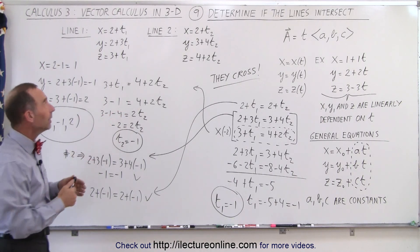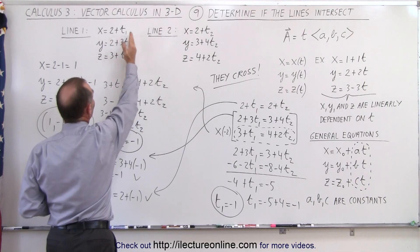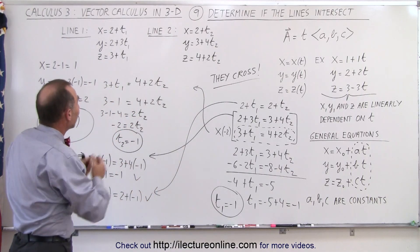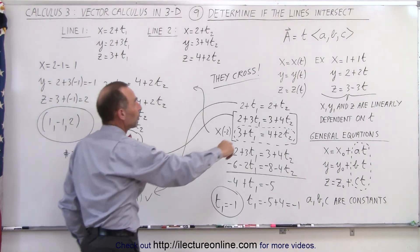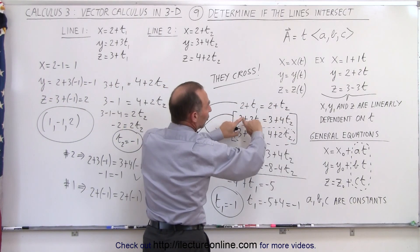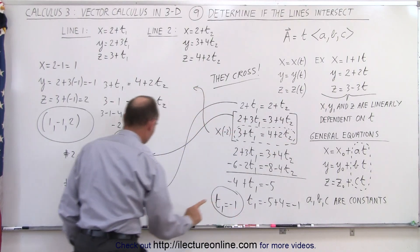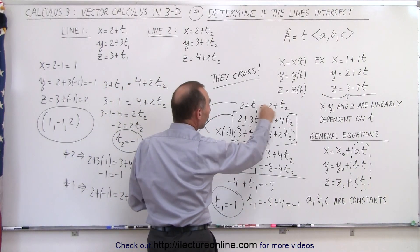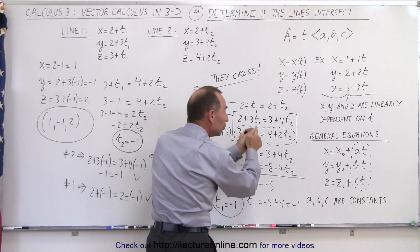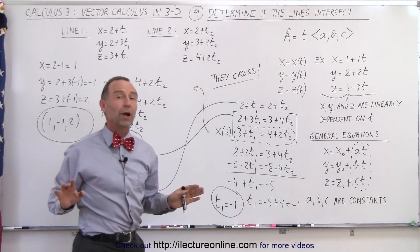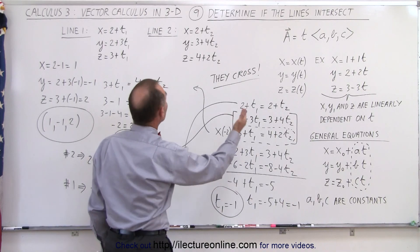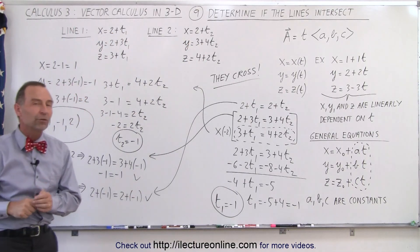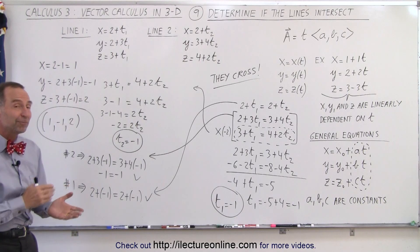To summarize: you determine that the lines cross by assigning different parametric variables t1 and t2 for each line, then setting the three equations equal to each other — giving you three equations and two unknowns. Take two of the equations and solve for the unknowns; we found t1 equals negative 1 and t2 equals negative 1. Those values must also satisfy the remaining equation. If they do, the lines cross; if they don't, they don't. Finally, plug in the value of t1 or t2 and solve for x, y, and z to find the exact crossing point. And that's how it's done.